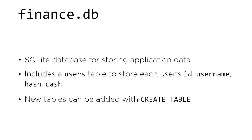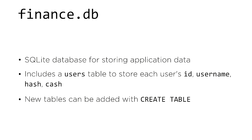Next in the distribution code is finance.db, the SQLite database that stores all application data. So far, finance.db includes a users table with columns for each user's ID, username, a hash of their password, and how much cash that user has. You'll likely need to add new tables to this database to finish implementing all the features of the web application. You can do that using the CREATE TABLE syntax in SQL.